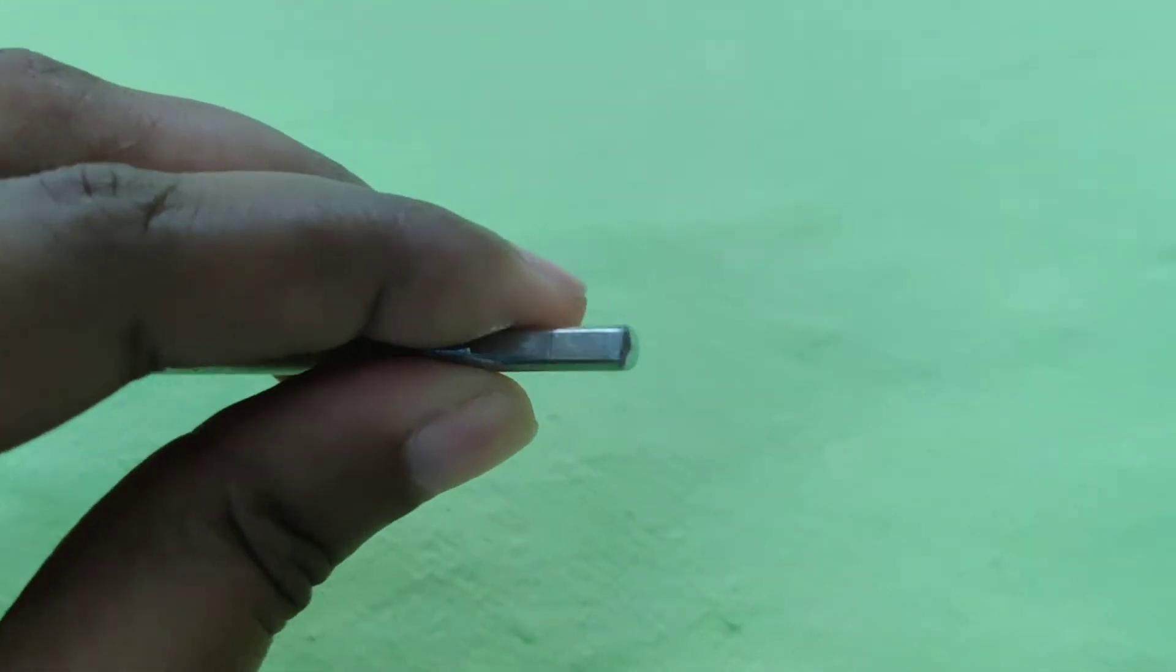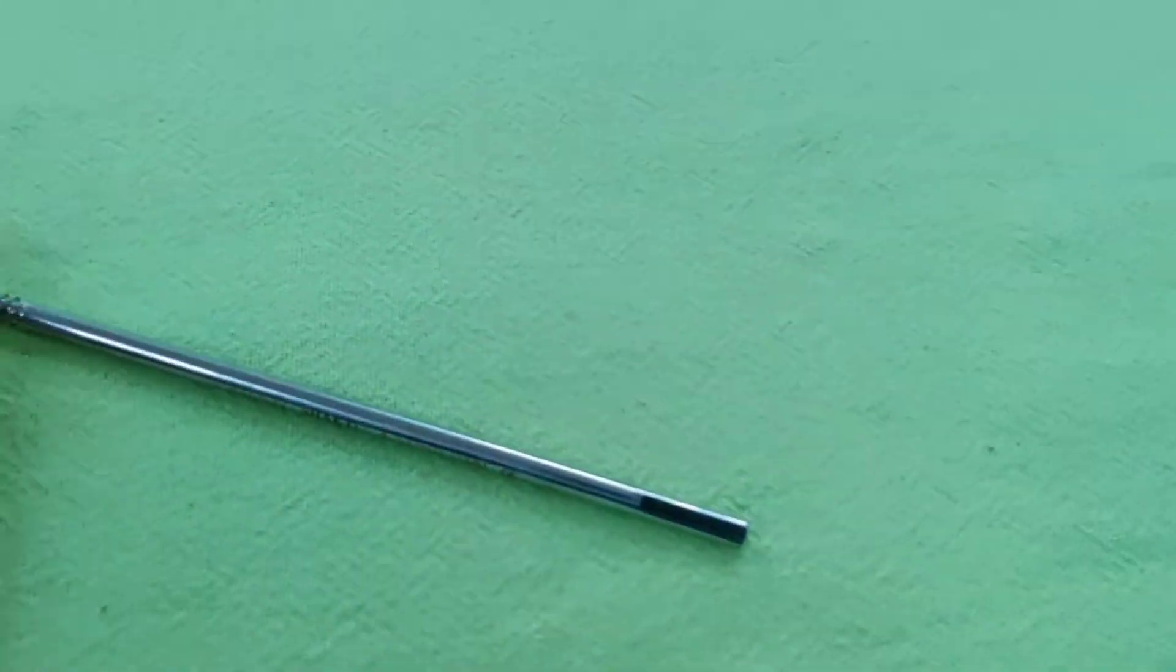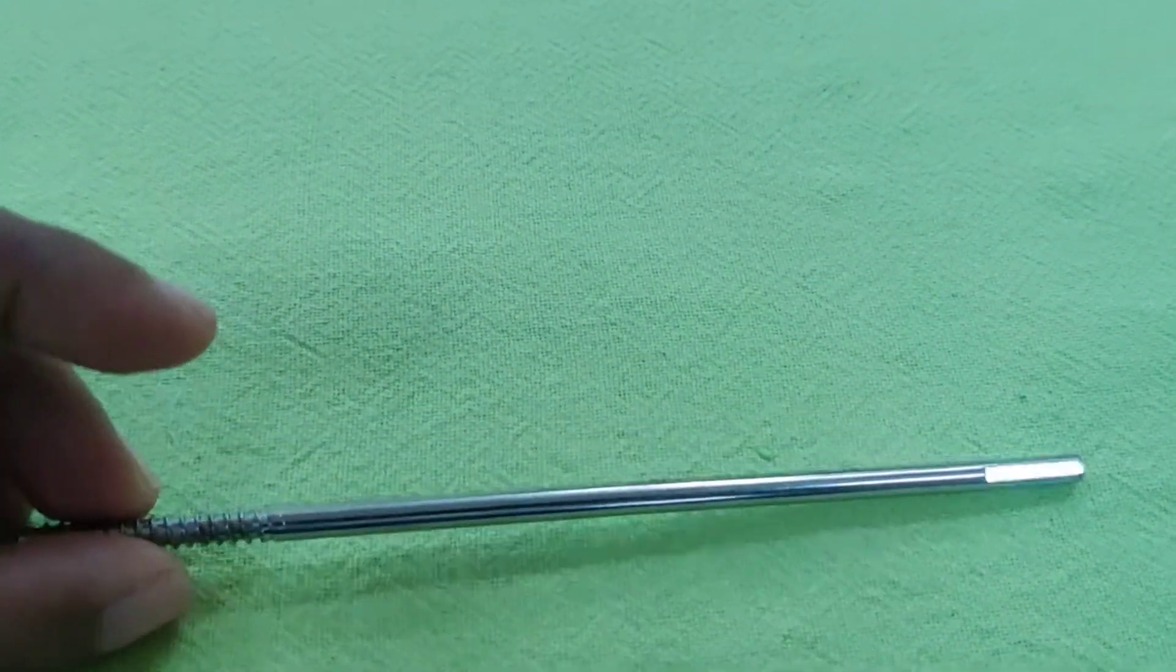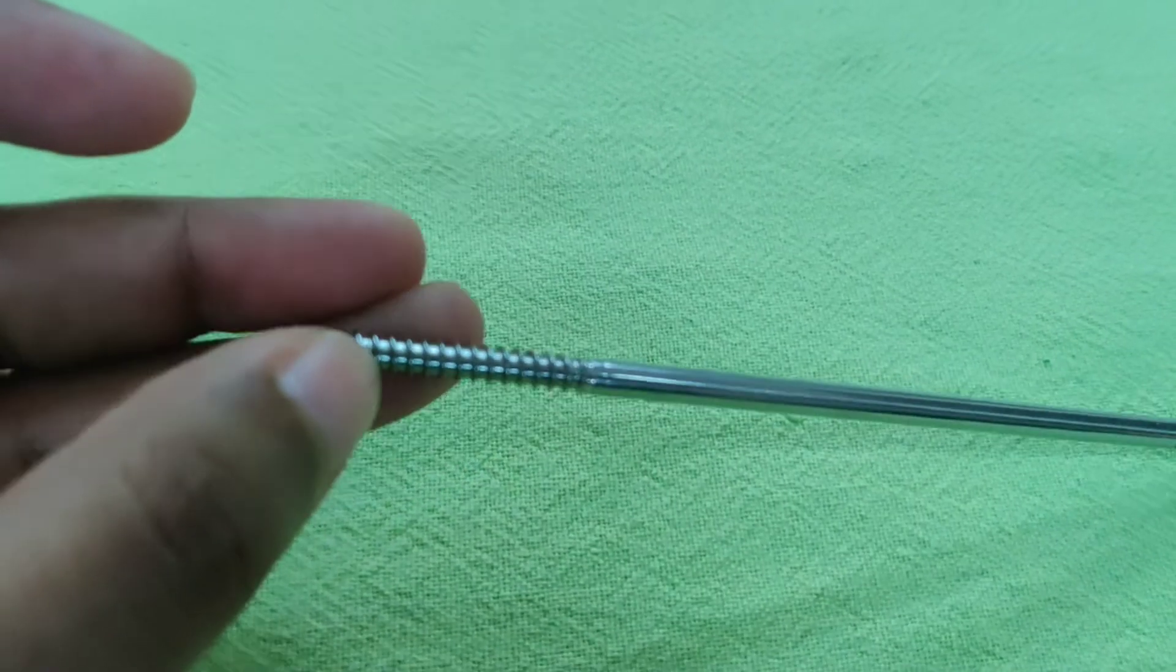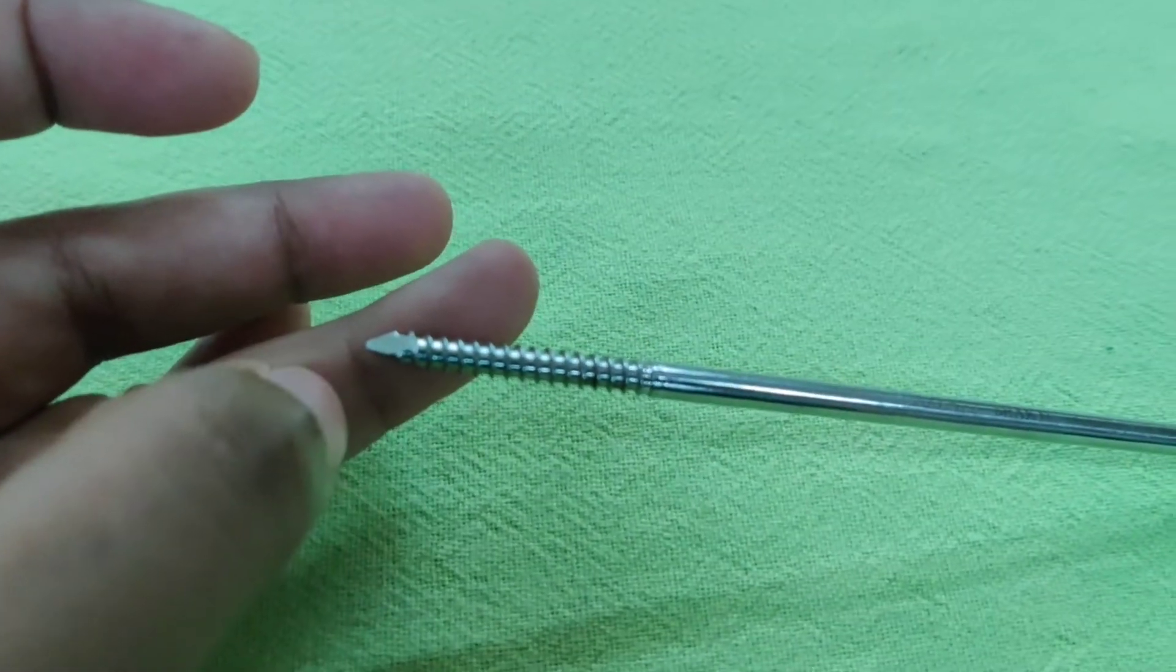Diameter varies from 2 to 6 mm at an interval of 0.5 mm. For femur, tibia and humerus, 4.5 mm or 5 mm shine screw will be used.